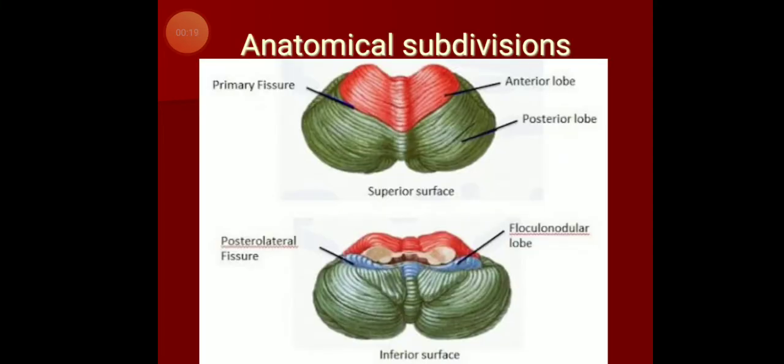Good morning. We will continue with the subdivisions of cerebellum. You should be familiar with two subdivisions: one is anatomical subdivision and the other is morphological subdivision. Looking at the figure, anatomically cerebellum is divided into three parts: an anterior lobe, a posterior lobe, and a flocculonodular lobe.